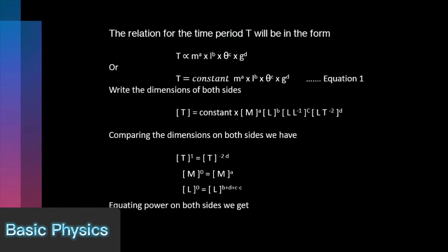The relation for the time period T is given by: Time T is proportional to m^a l^b theta^c g^d. Put the dimension of mass, length, theta, and gravity.